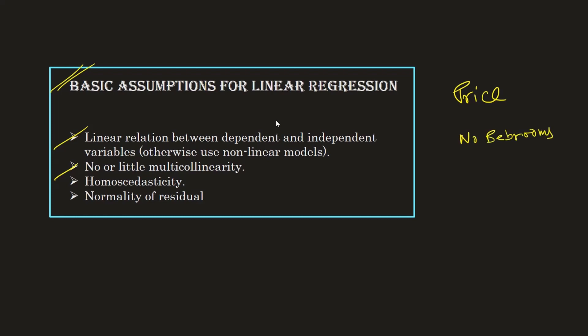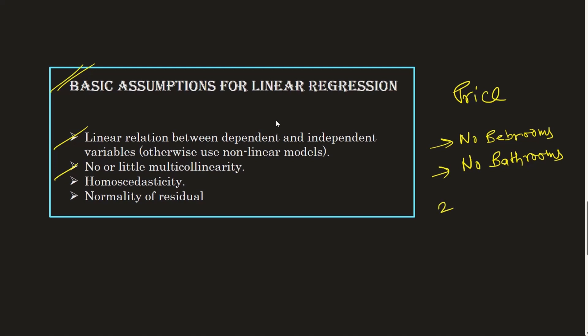The features or independent variables given to us are number of bedrooms and number of bathrooms. Let's assume in our dataset it is arranged such that every time the number of bedrooms increases, the number of bathrooms also increases — two bedrooms with two bathrooms, four bedrooms with four bathrooms, and eight bedrooms with eight bathrooms.